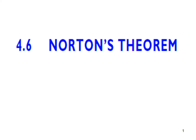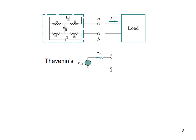Bismillahirrahmanirrahim. In this video we will learn about Norton's Theorem. As we have discussed in Thevenin's theorem, if you have a complicated circuit and you want to find current or voltage in a small load — this may be a bulb, a DC fan, or anything — then you have to go through all these calculations and then come to the result.